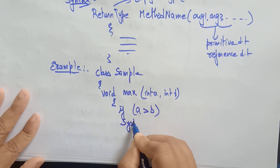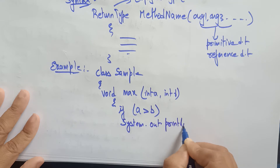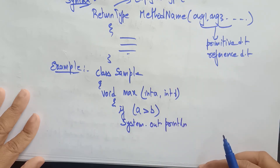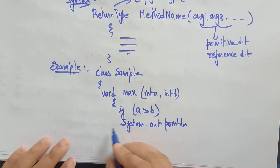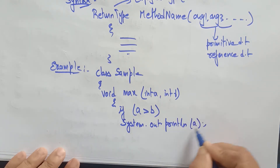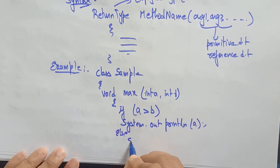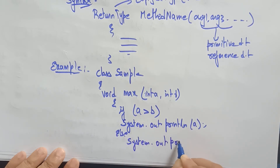So what I have to do is directly write System.out.println. I'm not returning the value to the main program — I'm simply printing the value right here. Because it doesn't have a return type, try to print in the same place: System.out.println(a); else System.out.println(b).